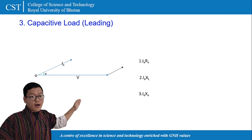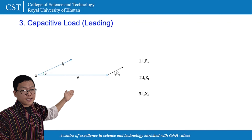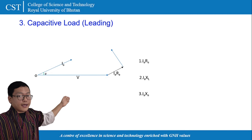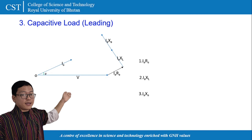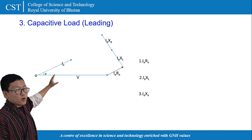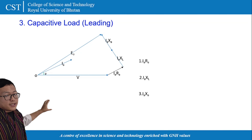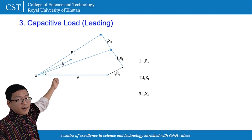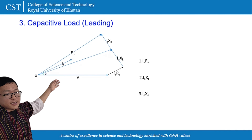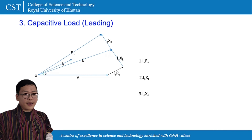We then join from point O to the junction of IAXA and IAXL to get the induced EMF after armature reactance. We then plot IAZs and IAZl similar to the previous resistive and inductive load examples. What we observe is that in capacitive load the induced EMF is always less than the terminal voltage, because the current leads the voltage — that's why E-node will always be less than V.